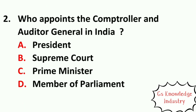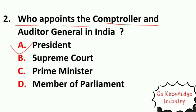Question two: who appoints the Comptroller and Auditor General in India? Option A, President. Option B, Supreme Court. Option C, Prime Minister. Option D, Member of Parliament. The right answer is Option A — the President appoints the Comptroller and Auditor General in India.